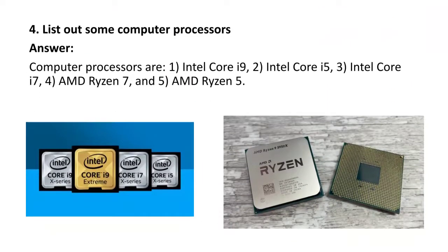Next question: list out some computer processors. There are different generations of processors, such as Intel Core i9, Intel Core i5, Intel Core i7, AMD Ryzen 7, and AMD Ryzen 5. These are different microprocessors with their generations.